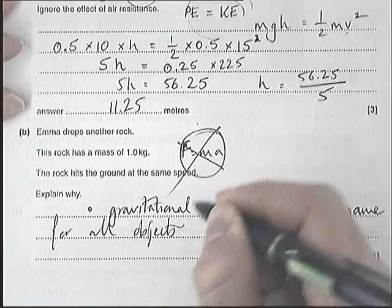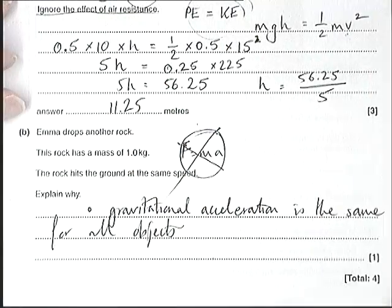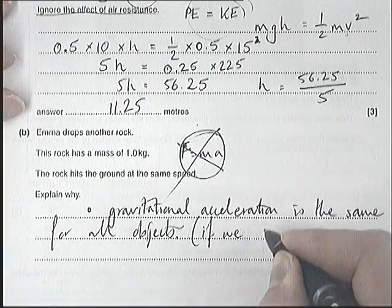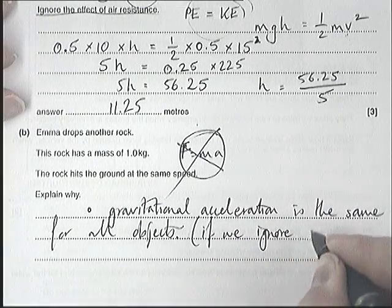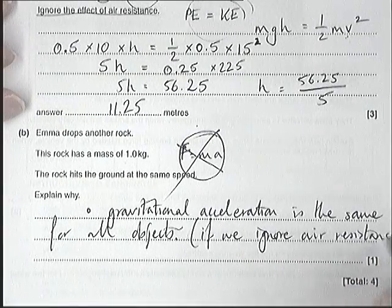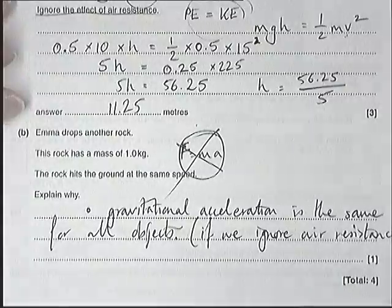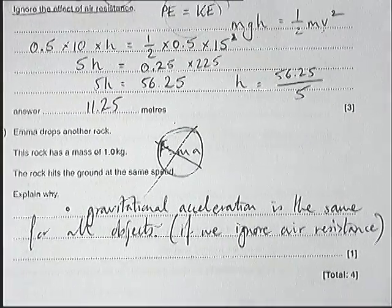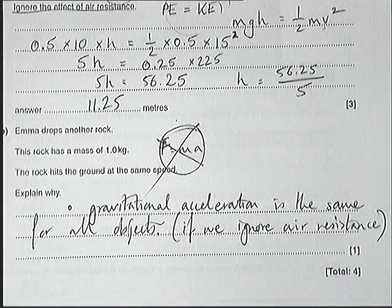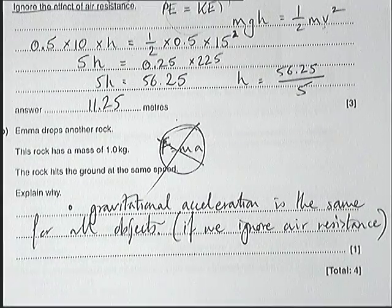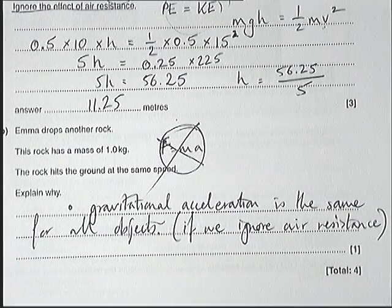You don't need to say that because you've already been told to ignore air resistance. But you could say if we ignore air resistance. Air resistance when you're falling is actually pretty low, especially when you're not falling very fast. We'll come back to air resistance if you ever need to talk about terminal velocity in P3. But here we're told to ignore air resistance, so we're not talking about terminal velocity at this point.